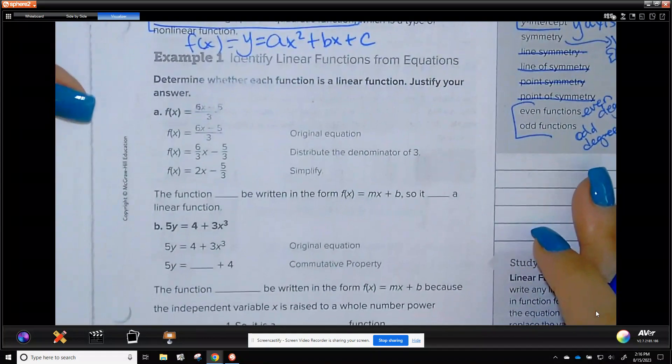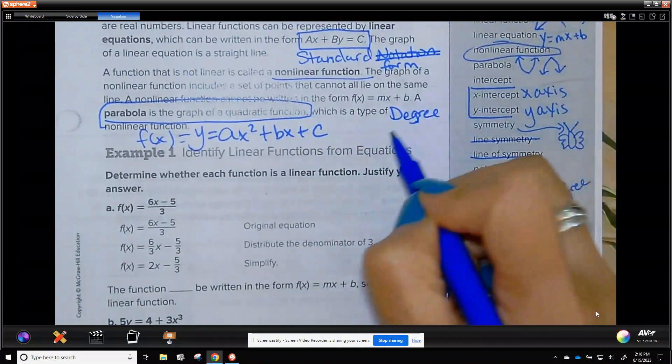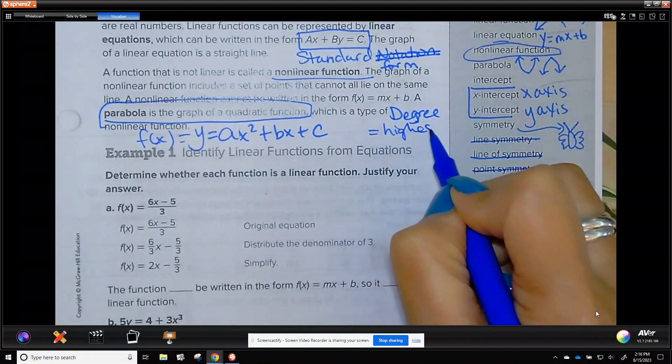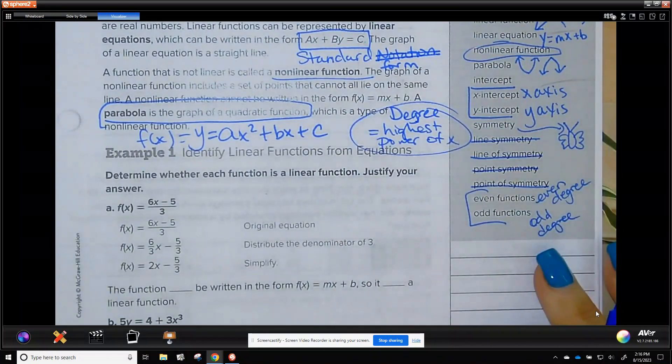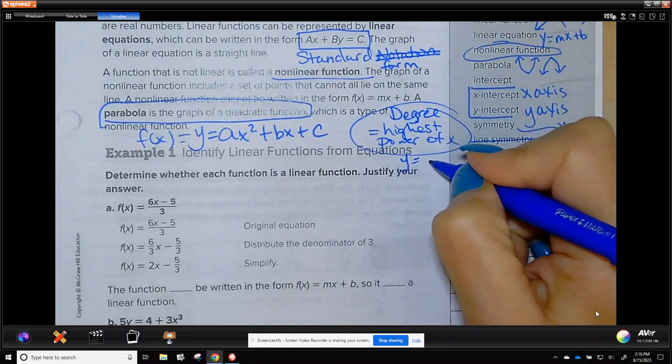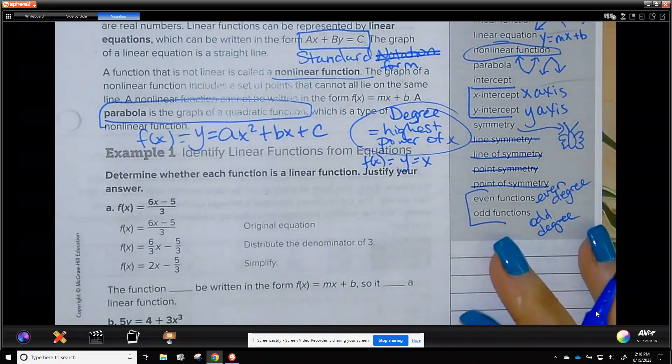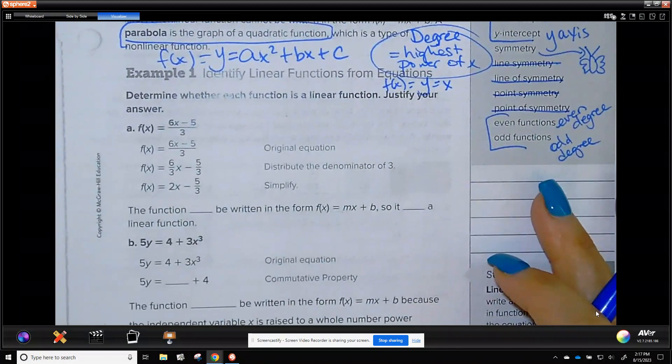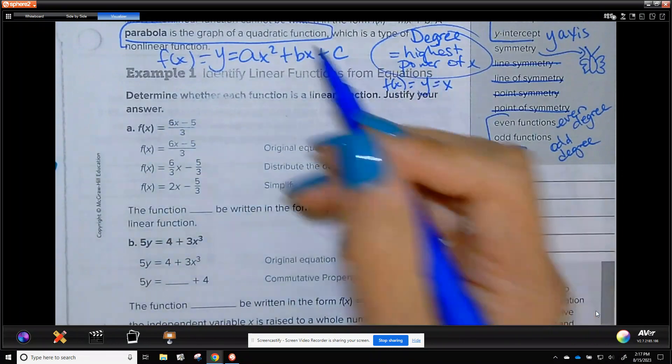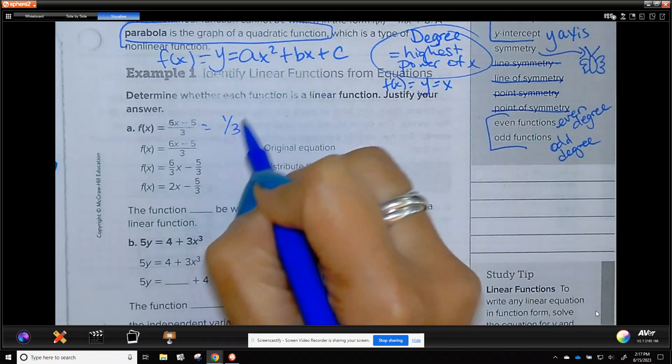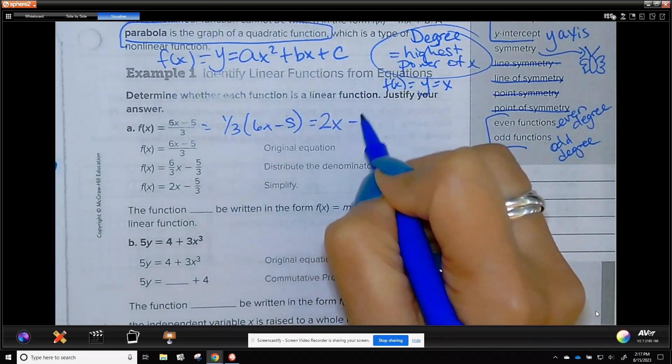So I'm going to teach you about degree. Degree is the highest power of x. Usually we have our functions written as y equals or a function of x, which means x is the variable that we use in the equation. And you just look for the highest power, and that's your degree. Let me show you an example. This is our first one. They're asking, is it linear? Well, this is the same as 1 third times 6x minus 5. You could also distribute the 1 third to get 2x minus 5 thirds.